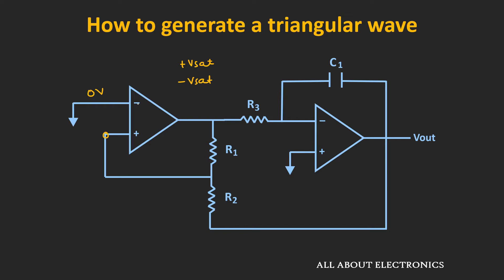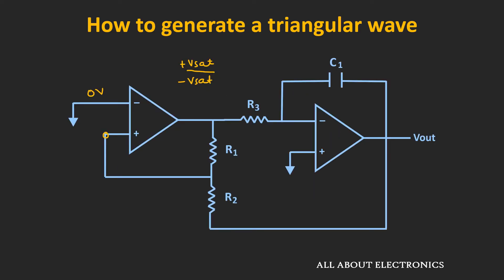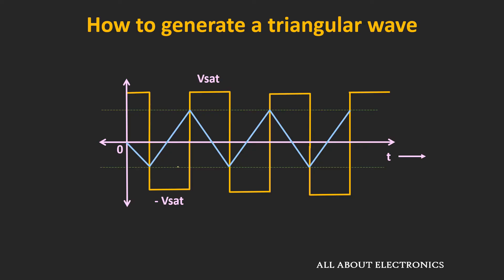Let's assume that the output of this Schmitt Trigger is initially equal to positive saturation voltage. In that case, the integrator will start integrating this positive saturation voltage. Depending upon the value of R3 and C1, as soon as this voltage just crosses some threshold voltage, you will see a transition in the output of the Schmitt Trigger from positive saturation voltage to negative saturation voltage. Once there is this transition, the integrator will start integrating the negative saturation voltage.